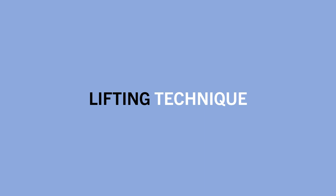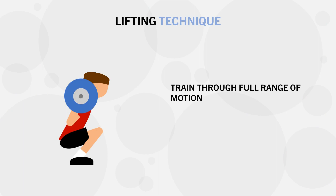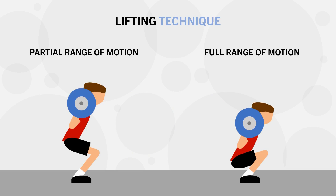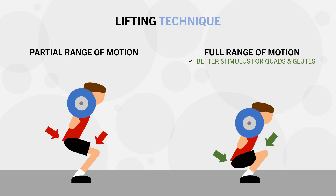The second practical implication is for lifting technique, more specifically for range of motion. This research provides more reason to train through a full range of motion with whatever exercises you are performing, because training through a full range of motion will ensure the muscle is being stressed at a longer length, which will likely result in greater muscle growth. A classic example of this is for squats and their variations — squatting with full depth will stretch the quads and glutes to a larger extent compared with partial range of motion, training these muscles at a longer length under load and probably resulting in greater muscle growth. It should be noted that there are potentially other mechanisms also contributing to full range of motion training being superior, but the muscle length discussion is just one mechanism explaining this.